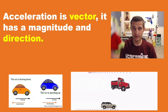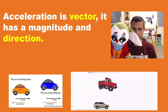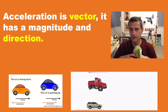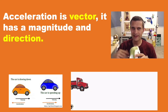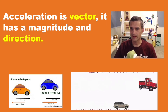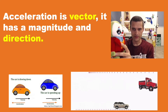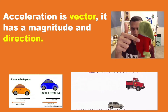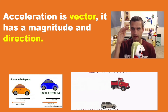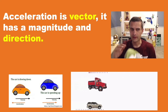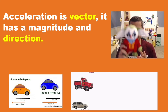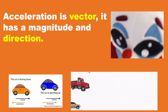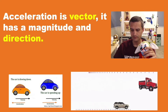Velocity is a vector quantity, which means there's a direction to it. For velocity, it's easy to tell — if something's moving in a certain direction, that's the direction of its velocity. For acceleration, it's a bit trickier to tell which way it points.